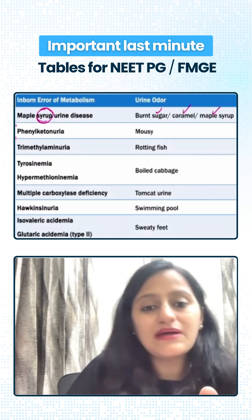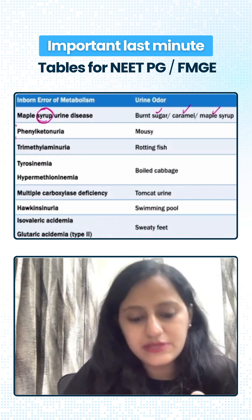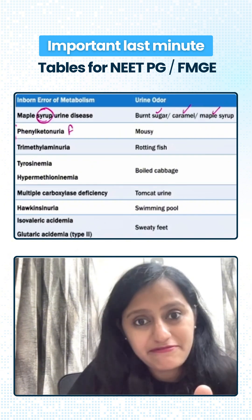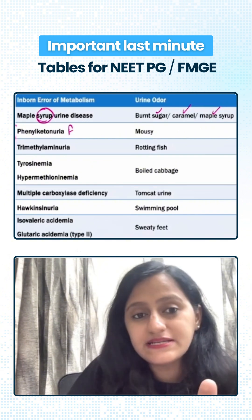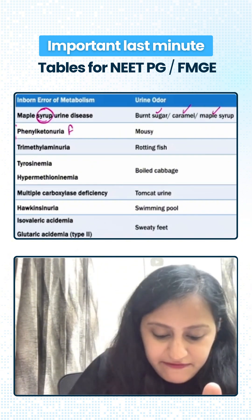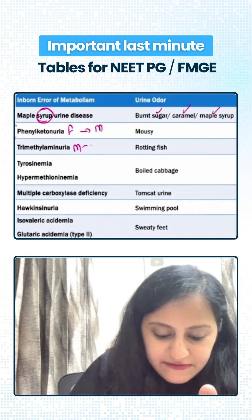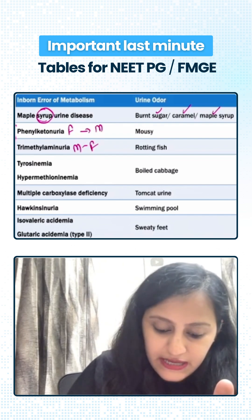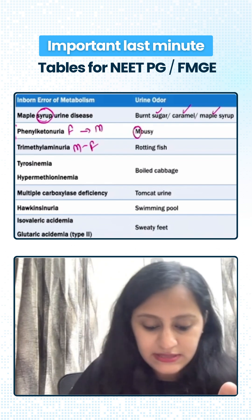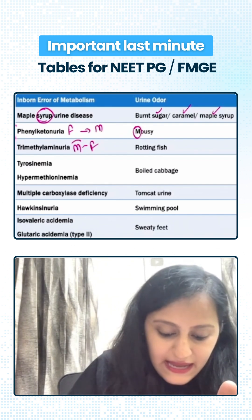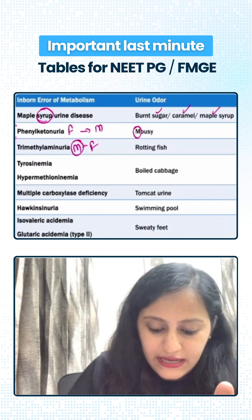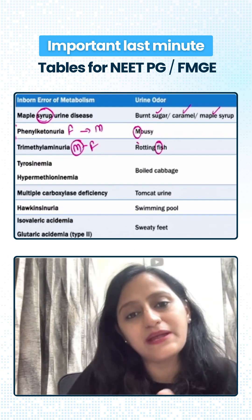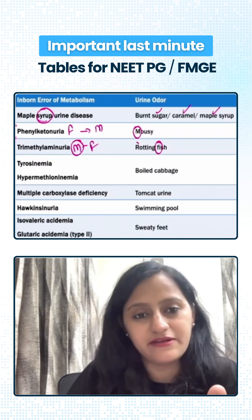Phenylketonuria and trimethylaminuria — remember phenyl is 'F' phonetically. F is for M and M is for F. So phenylketonuria has mousy or musty odor, and trimethylaminuria has fishy odor. So F is for M and M is for F.